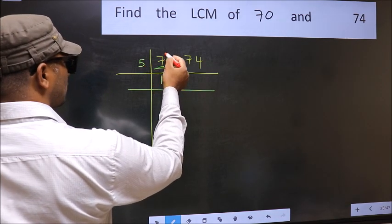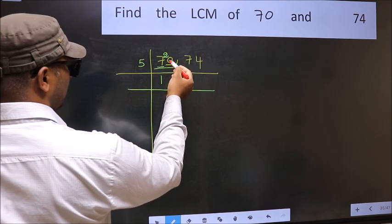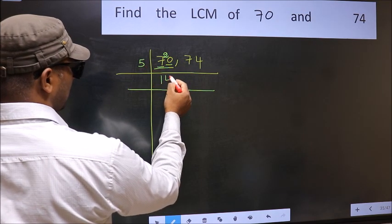7 minus 5 is 2. 2 carried forward is 20. When do we get 20 in 5 table? 5 fours 20.